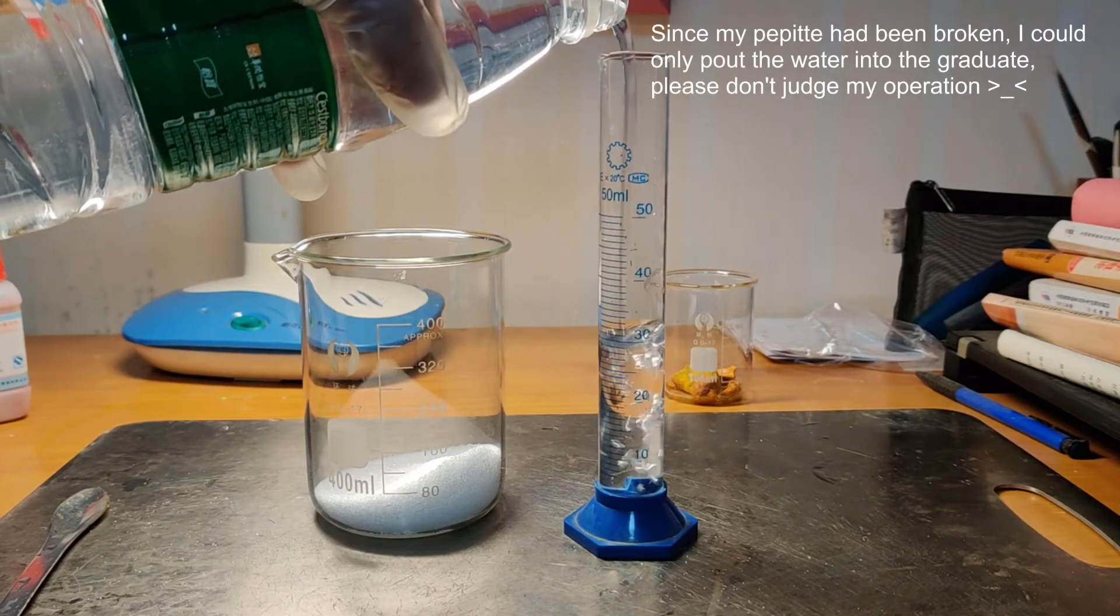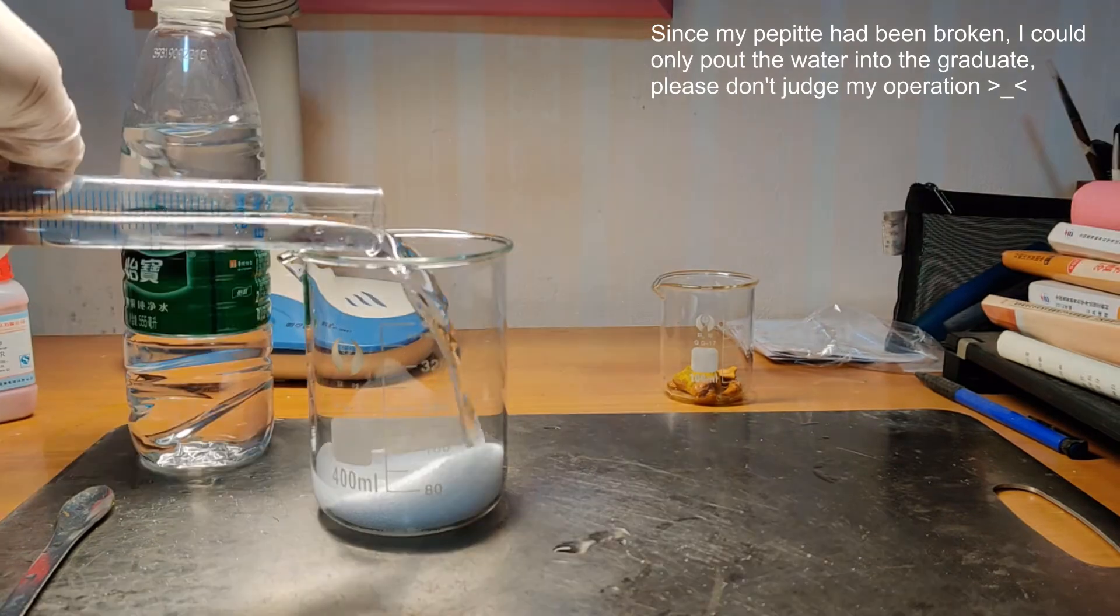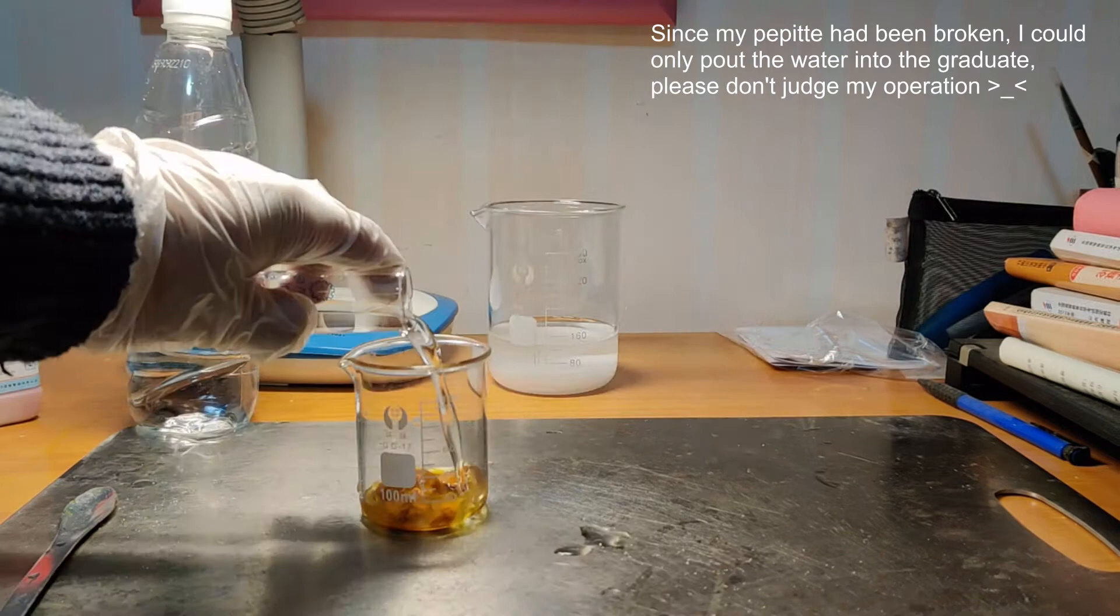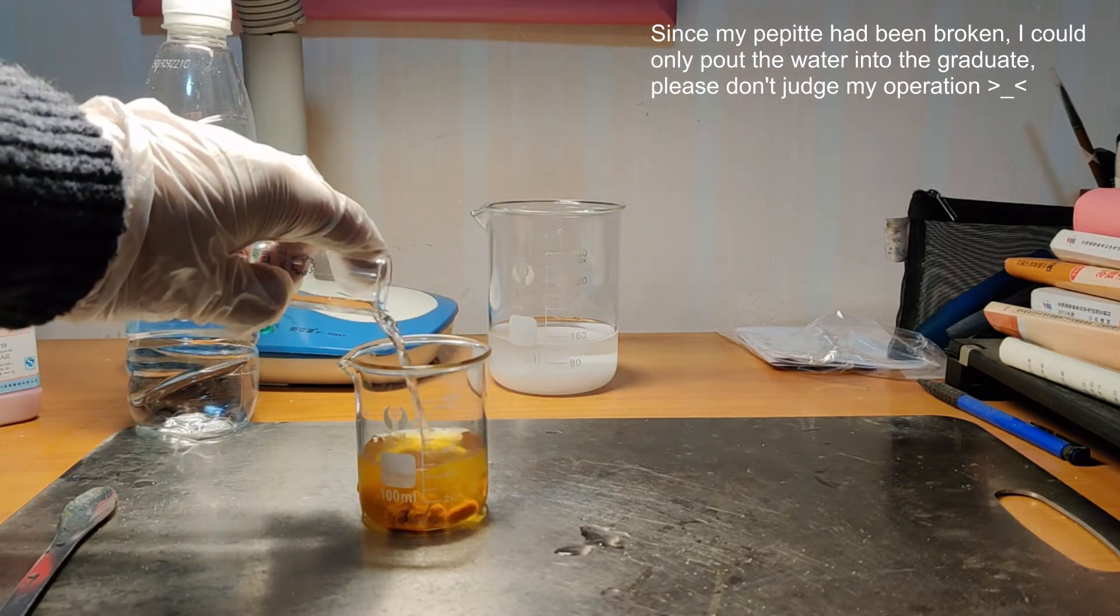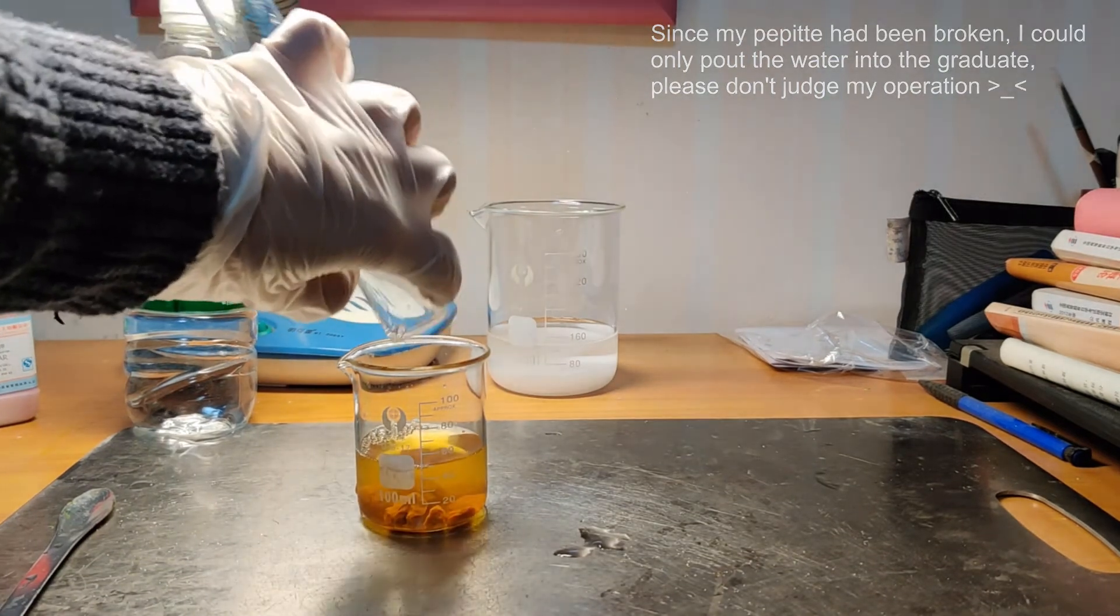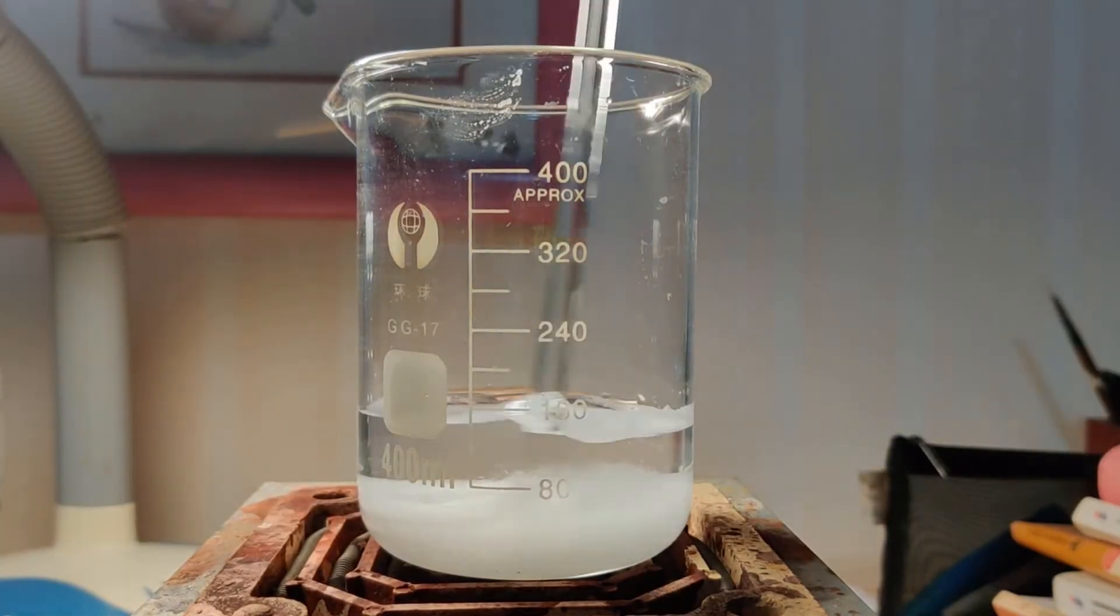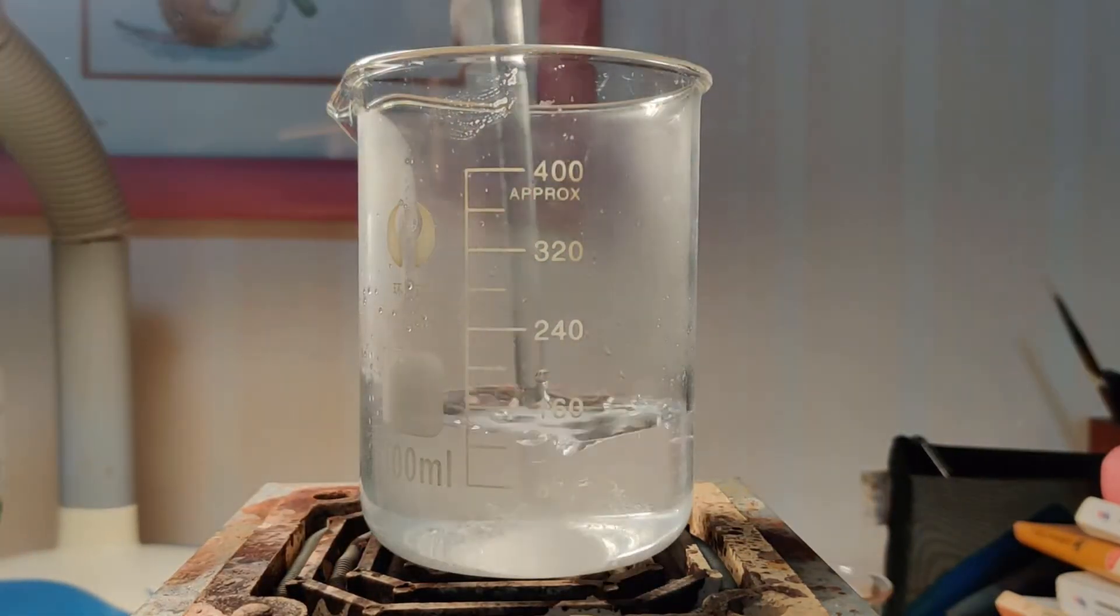The second step is to make the solution. I used 15 milliliters and 100 milliliters of water respectively to dissolve ferric trichloride and potassium oxalate. Since I don't have a magnetic stirrer, I just use a glass rod to stir and turn on my oven to accelerate the dissolution.